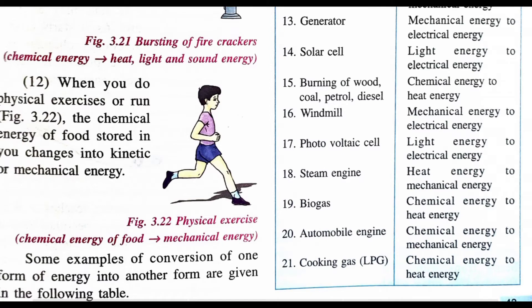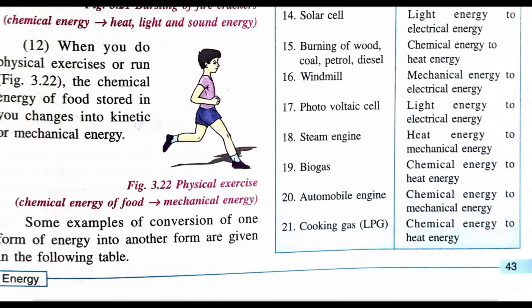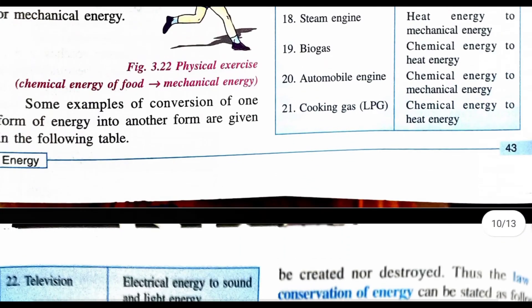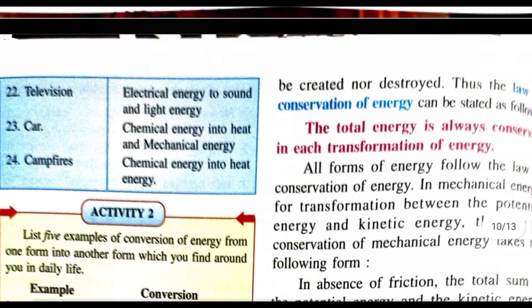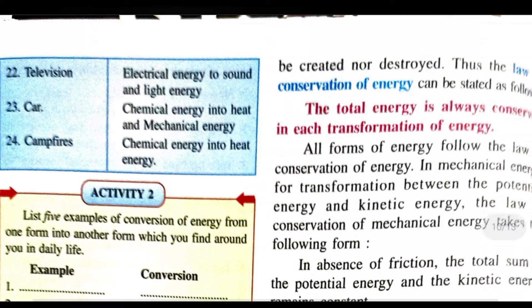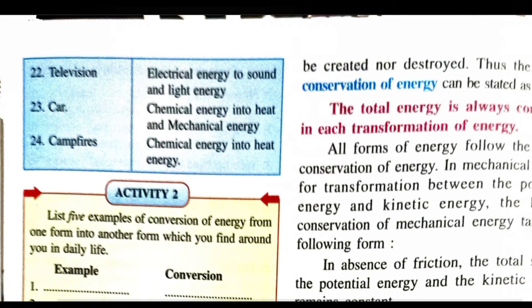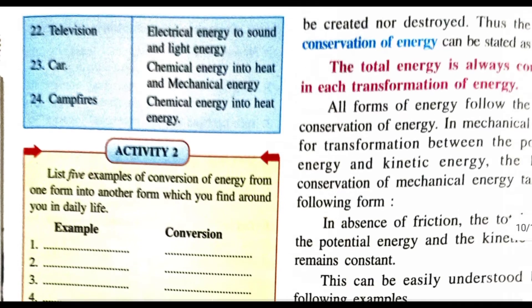Solar panel converts light energy to electrical energy; burning of wood, coal, petrol or diesel converts chemical energy to heat energy; windmill converts mechanical energy to electrical energy; photovoltaic cell converts light energy to electrical energy; steam engine converts heat energy to mechanical energy; biogas converts chemical energy to heat energy; automobile engine converts chemical energy to mechanical energy; cooking gas converts chemical energy to heat energy. Television converts electrical energy to sound and light energy; car converts chemical energy to mechanical energy; campfire converts chemical energy to heat energy.